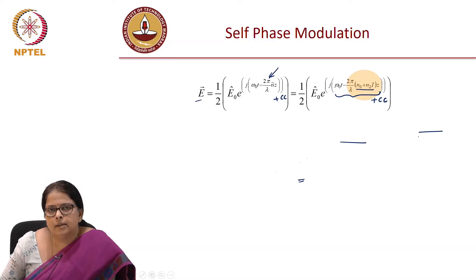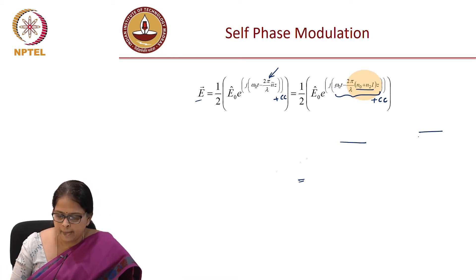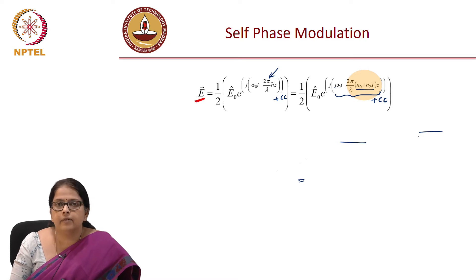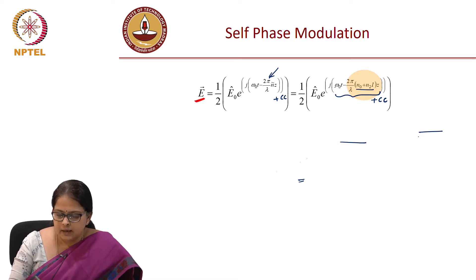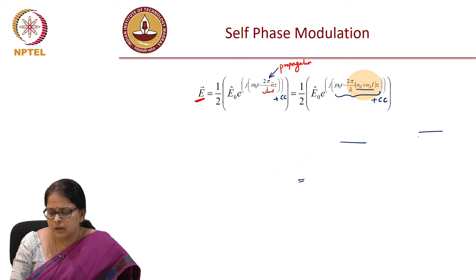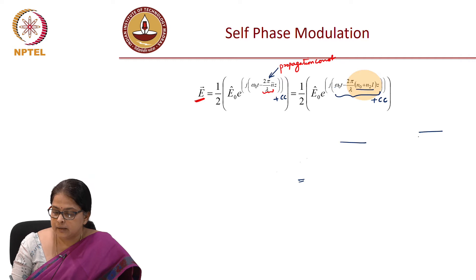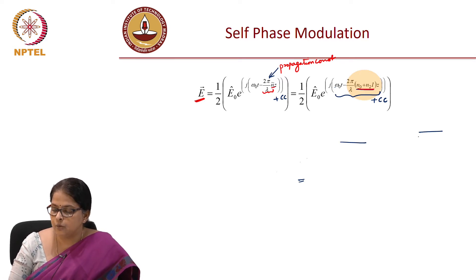We now see how this intensity-dependent refractive index is going to affect a communication signal propagating through the fiber. Let E be the electric field representing our signal: E = E₀ · e^(j(ωt - βz)). This propagation constant gets modified considering the nonlinear contribution to the refractive index, and this modified refractive index can be represented as N₀ + N₂I.